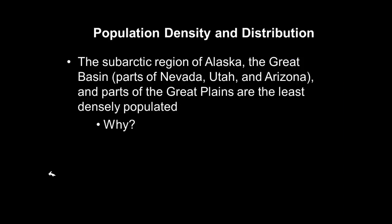The subarctic region of Alaska and the Great Basin — parts of Nevada, Utah, and Arizona — are the least densely populated places in North America, where the fewest people live. The reason is climate: the subarctic region is very cold, and those parts of the Great Basin tend to be desert areas that do not have fertile land or resources.